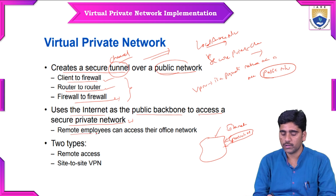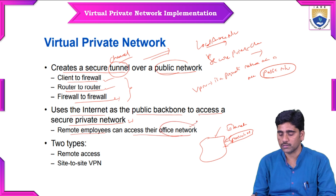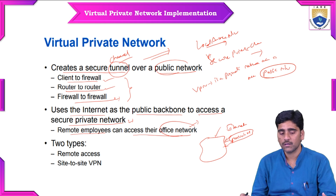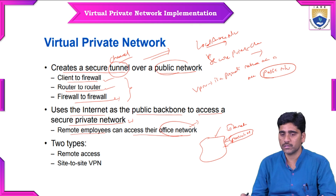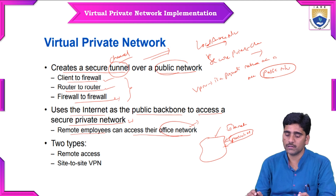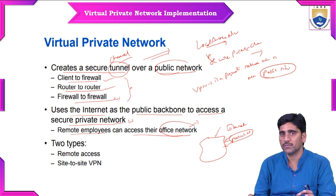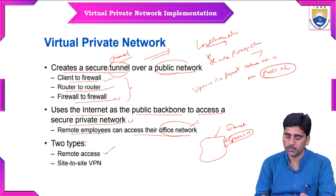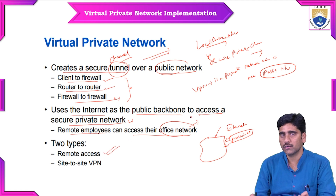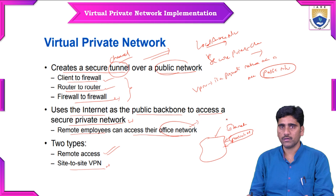Remote employees can access their office network. Those working from remote locations and accessing data remotely can use this secure channel to access their office work and office network. Virtual Private Networks are two types: one is remote access network and the second is site-to-site Virtual Private Network.